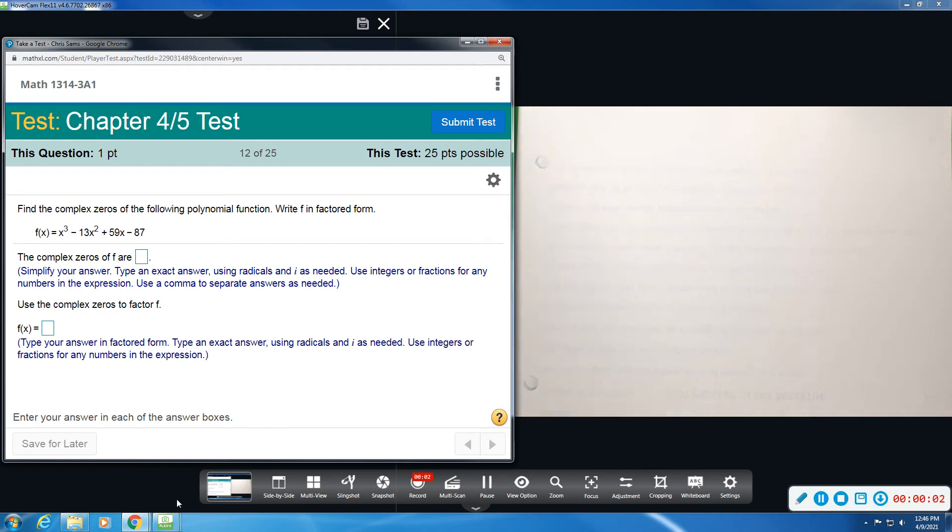All right, number 12, we're going to find the complex zeros of this function, and then we're going to write it in factored form. Okay, so I'm going to do it all by hand.